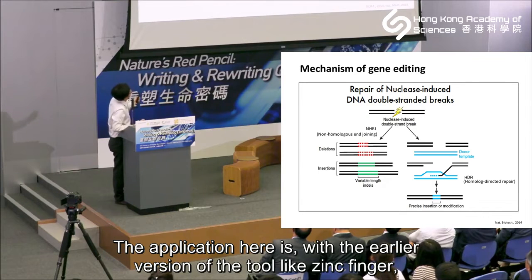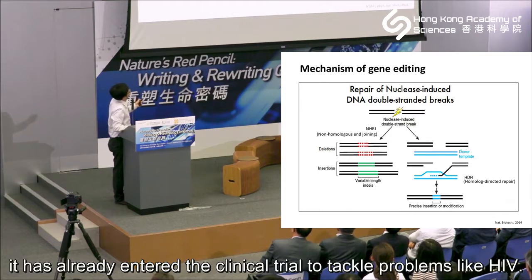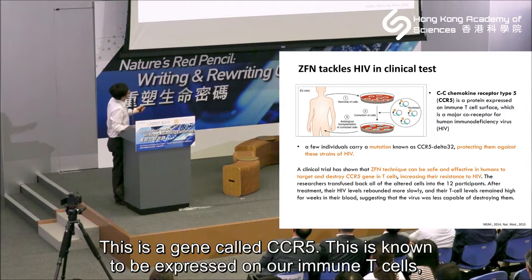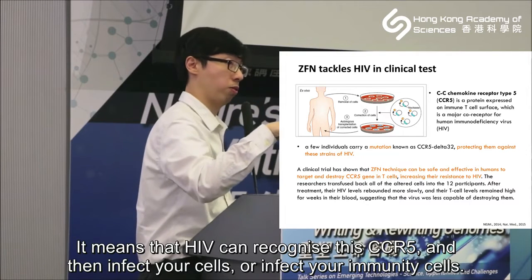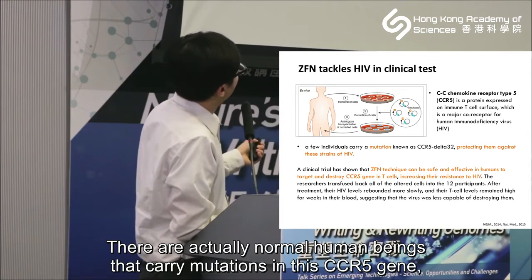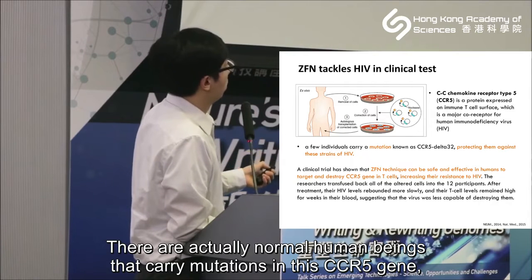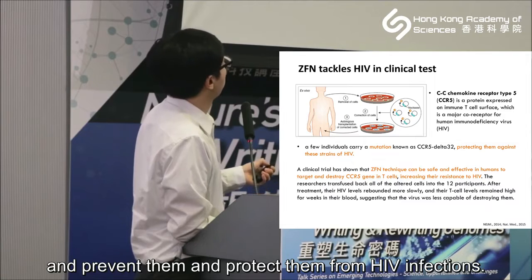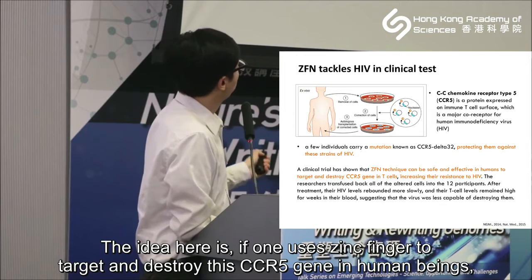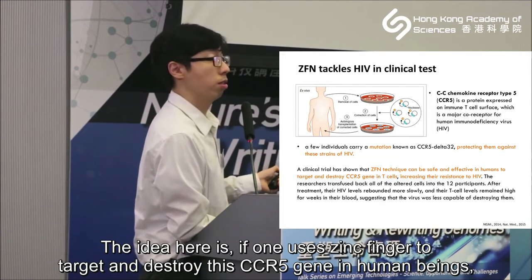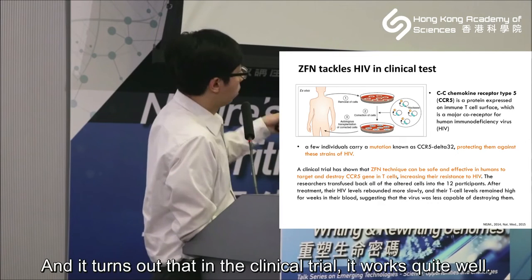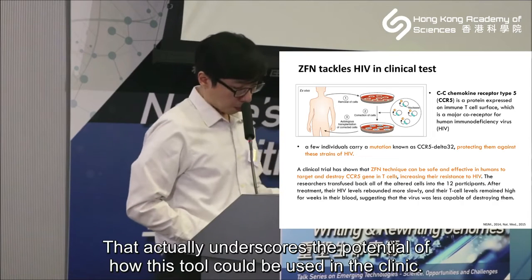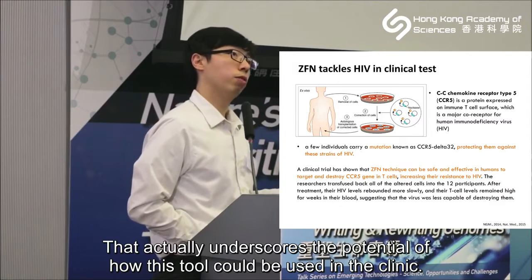With the earlier version of the tool like Zinc Fingers, it already entered clinical trials to tackle problems like HIV. There is a gene called CCR5 that is expressed on our immune T cells and serves as the receptor for HIV - meaning HIV can recognize CCR5 and then infect your immune T cells. There are also normal human beings who carry mutations in these CCR5 genes that protect them from HIV infection. The idea is that if one uses Zinc Finger to target and destroy these CCR5 genes, they can potentially protect the human from being infected by HIV. In clinical trials, it works quite well, further underscoring the potential of these tools in the clinic.